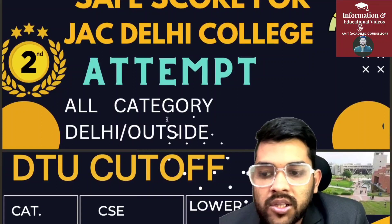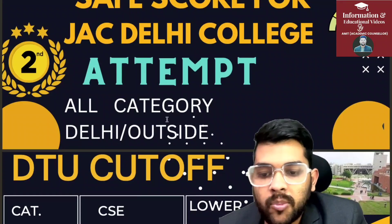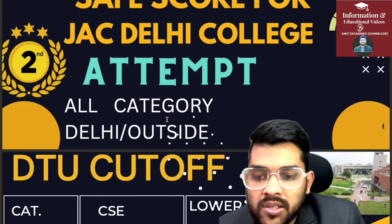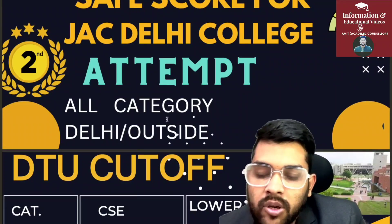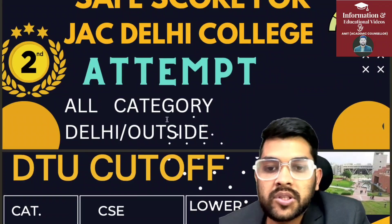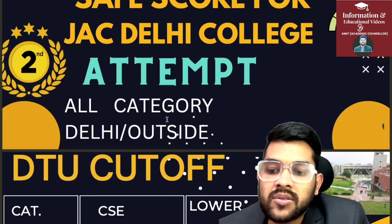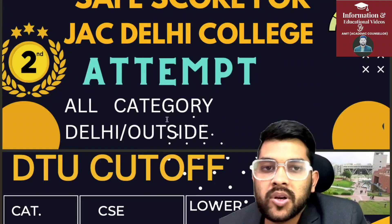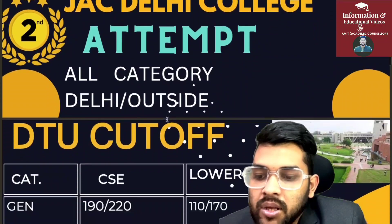Let us start with the first college, that is DTU. I will talk about the cutoff for CSE and lower branch. In upcoming days, I will try to provide branch-wise, rank-wise, and percentile-wise cutoffs for all branches of a particular college. For Delhi students, there is 85% reservation for all categories, and for outside Delhi, 15% seats are reserved — that's why there is a difference in the marks.